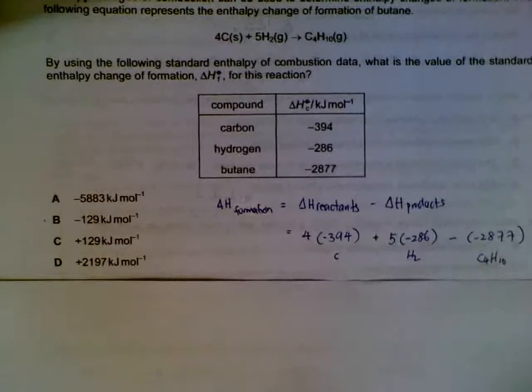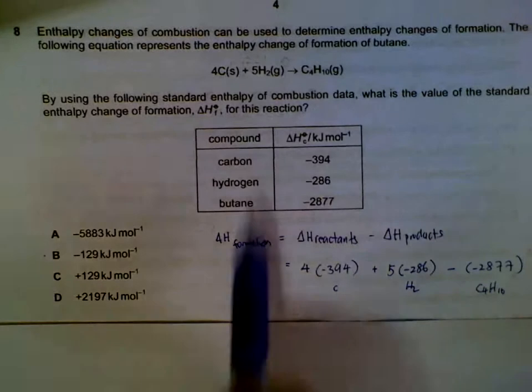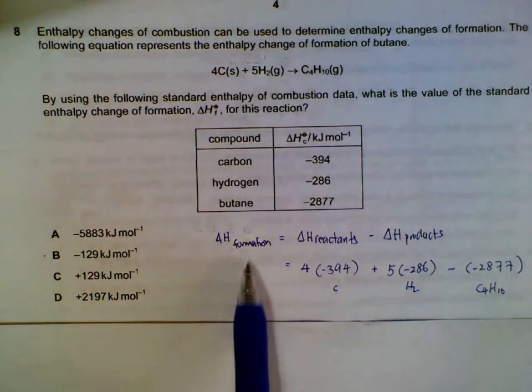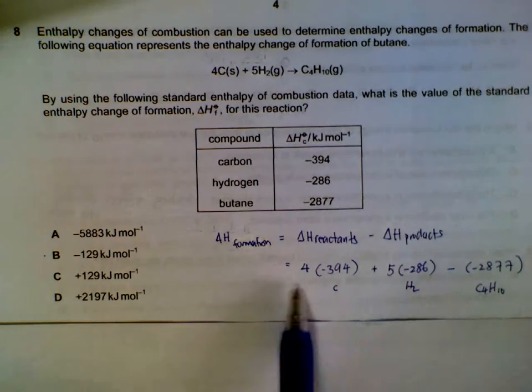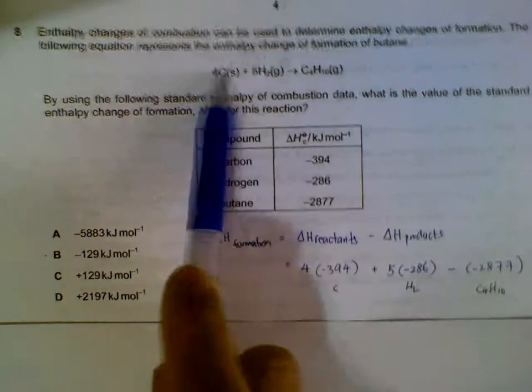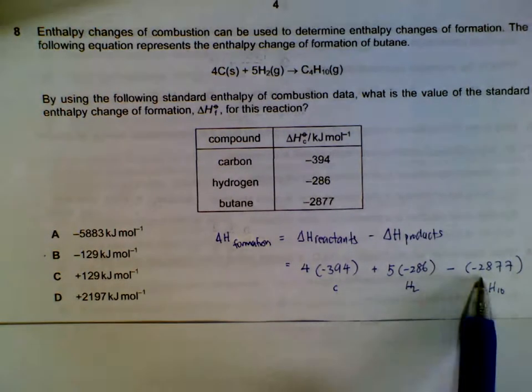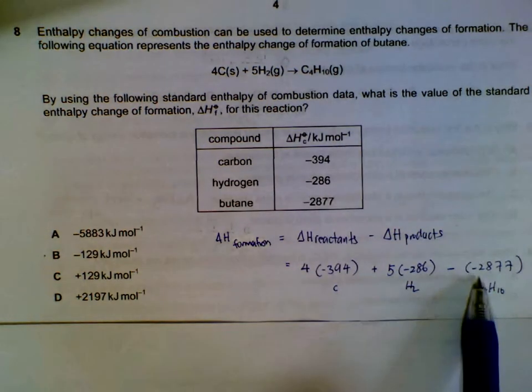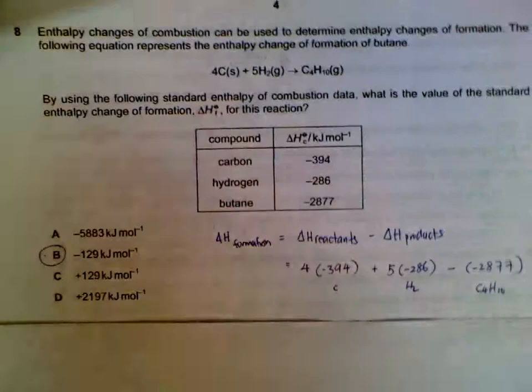Number eight. We have heat of combustion given for these substances, and we are supposed to find heat of formation. The simple equation would be heat of formation is heat of reactants minus heat of products. So we have 4 times carbon, because there are 4 carbons here, plus 5 times hydrogen combustion, then we subtract 1 mole of your products, which is butane. Once we do these calculations, we will have minus 129 kilojoules per mole.